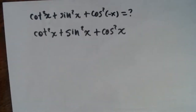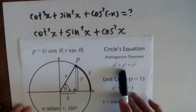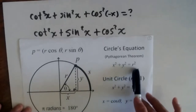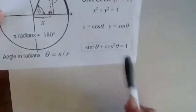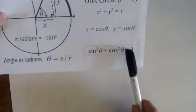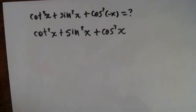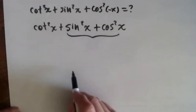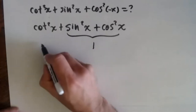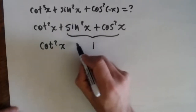Now, when you have squares, you have to remember your Pythagorean identity. The one we always have to remember is: sine squared plus cosine squared equals one. So sine squared plus cosine squared — this is one. So you have cotangent squared x plus one.